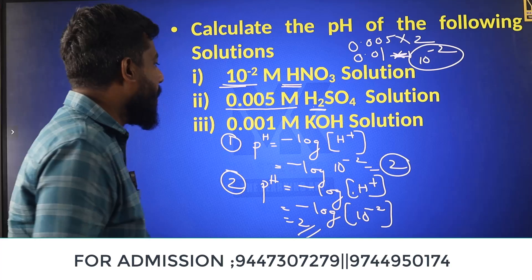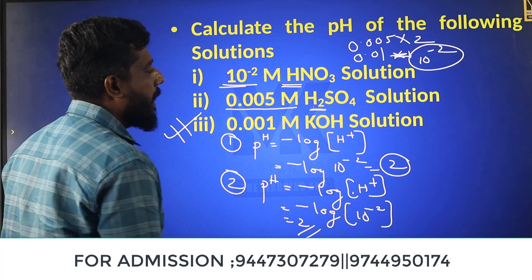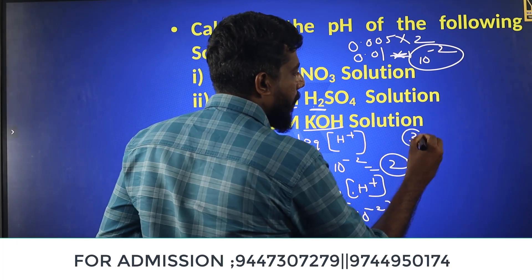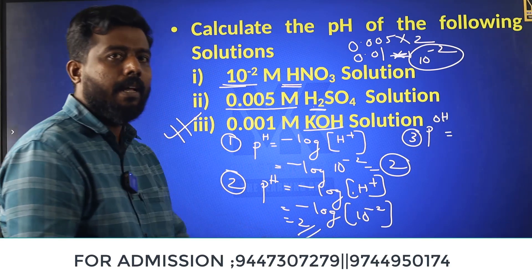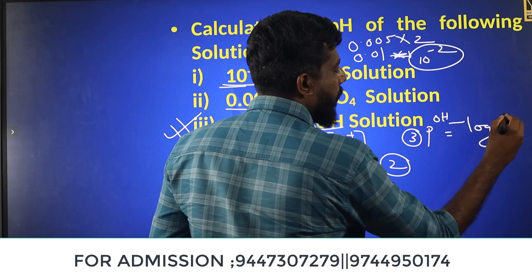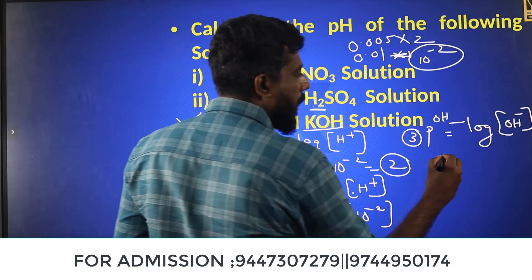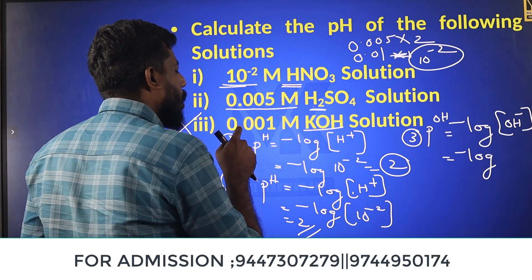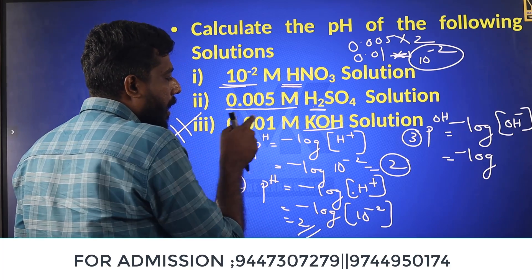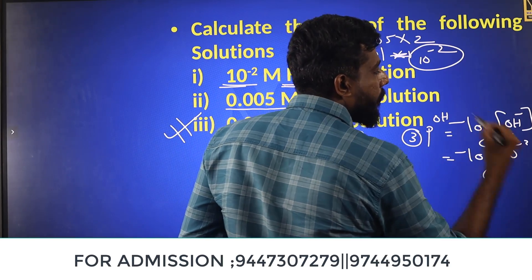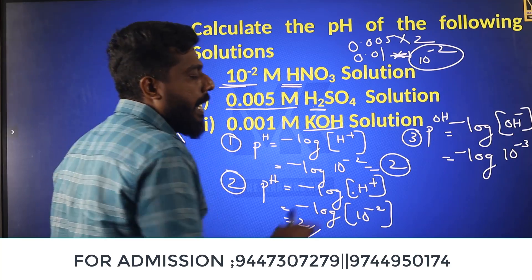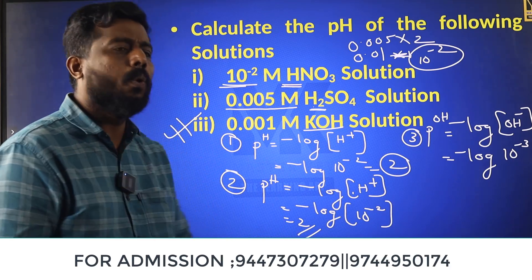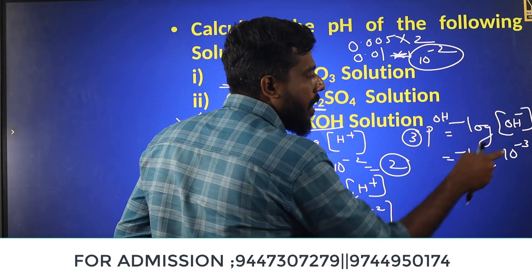In the third case, we are given KOH. We need to find pOH. The equation is: pOH equals negative log of OH⁻. The concentration is 0.001, which equals 10 raised to minus 3. So pOH equals negative log of 10 raised to minus 3 equals minus times minus 3 equals 3. pOH equals 3.